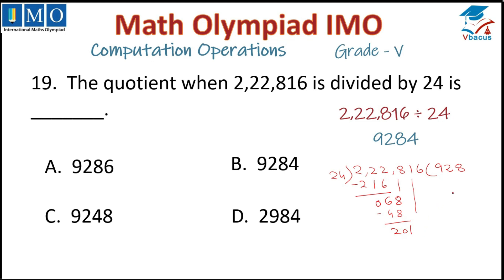Drop down 1, so 201. 24 times 8 is 192. 8 fours are 32, carry 3. 8 twos are 16 plus 3 is 19. So 201 minus 192 is 9. Drop down next number that is 6, so 96. 24 fours are 96. So the answer is 9,284.